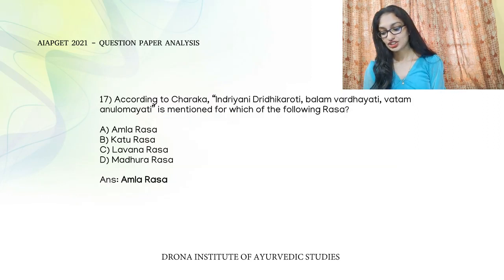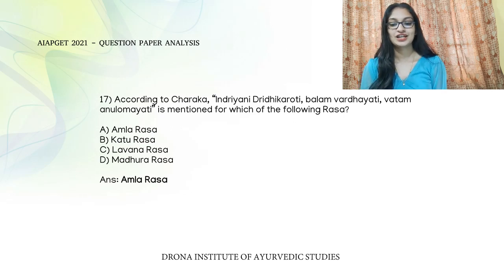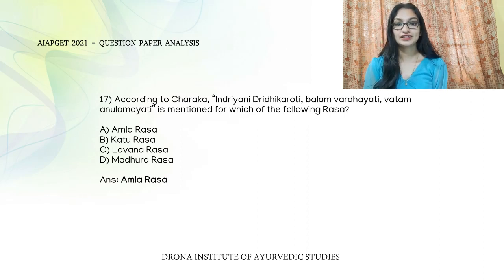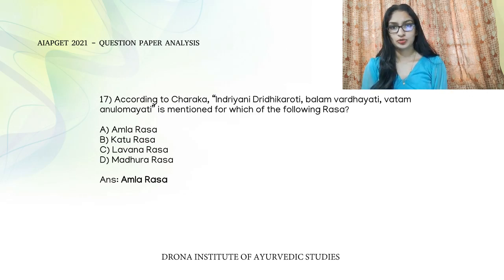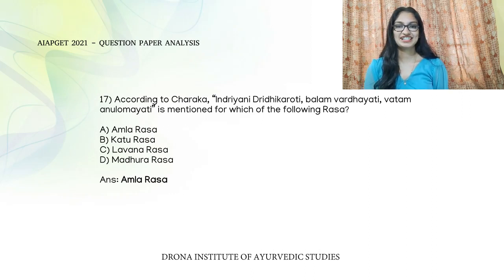According to Charaka Samhita, 'Indriyani Dhridhikaroti, Bhalam Vardhayati, Vatam Anulomiyati' is mentioned for Amla Rasa in the 26th chapter. For Katu Rasa: Vakram Shodhayati, Sputikaroti Indriyani. For Lavanarasa: Sarvaksharida Aveyavan Mridhukaroti. For Madhura Rasa: Sapthadhatu Vardhanam, Shat Indriyaprasadhanam.